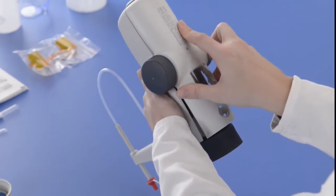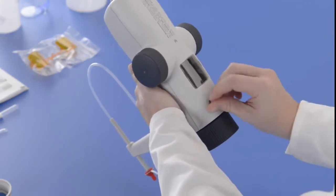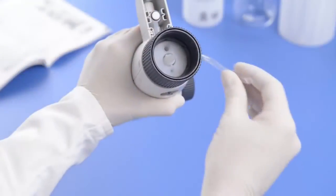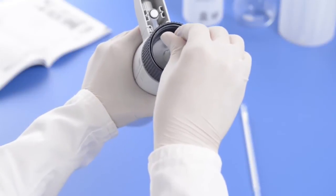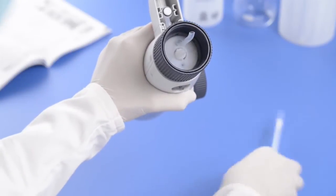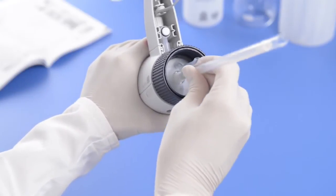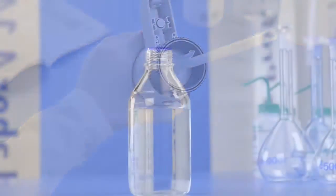Screw the air vent cap back on. Now the recirculation tube and the filling tube can be mounted and adjusted.